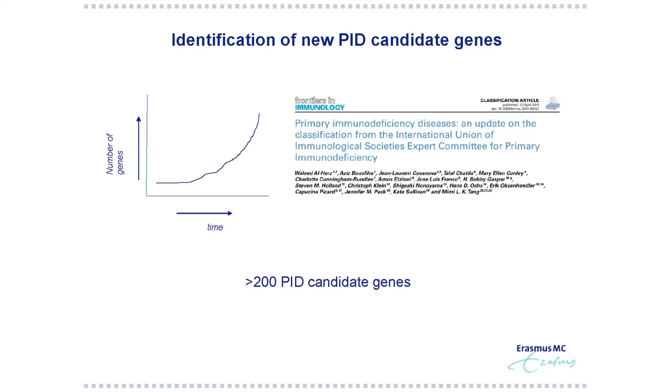Especially with the introduction of next-generation sequencing, a lot of patients could be identified with a genetic defect in the so-called PID candidate genes. Every two years, there is an update by the IOIS with all the PID genes. The last report was in 2014; in the 2011 version, 30 new genes were identified, and between 2011 and the previous version, 15 new genes were identified. The amount of PID candidate genes is really increasing.